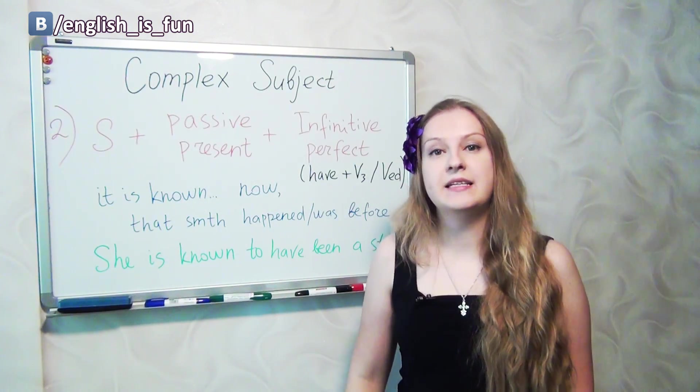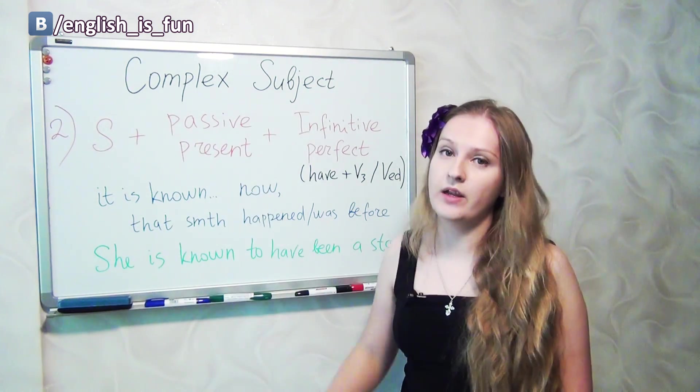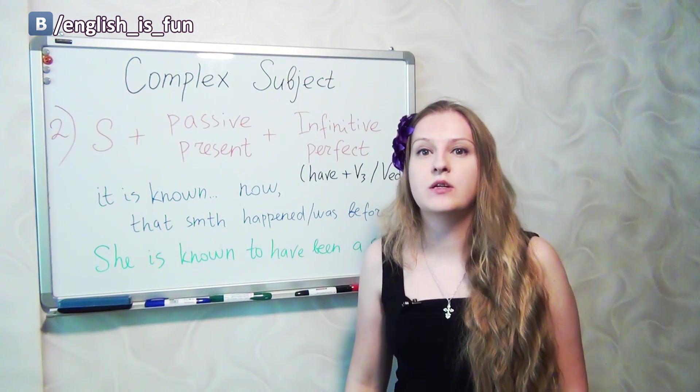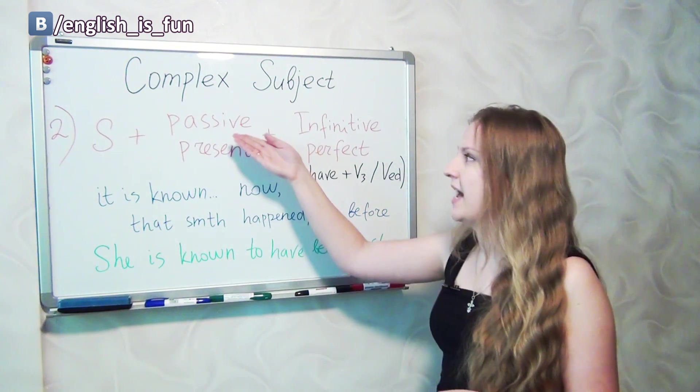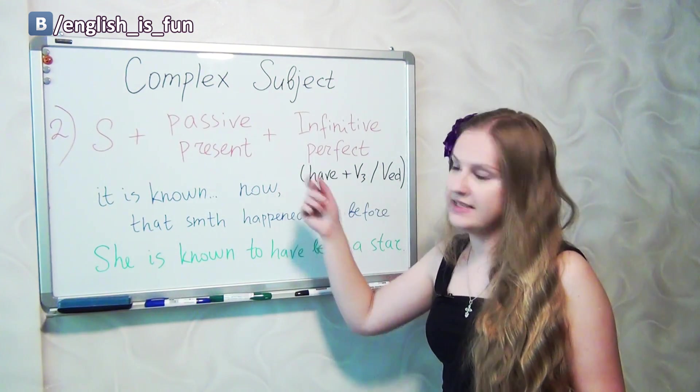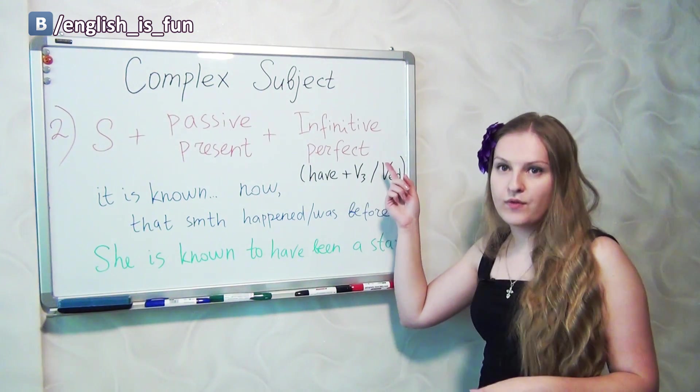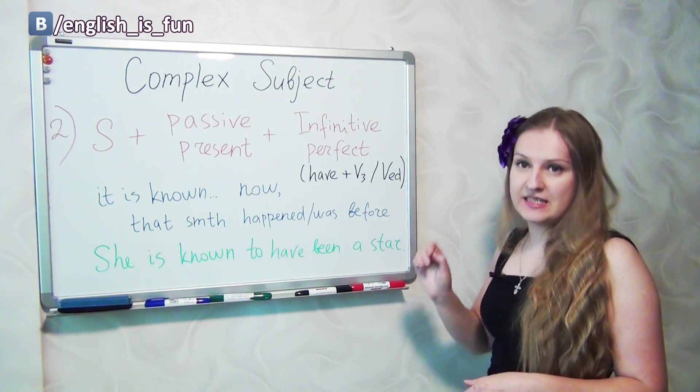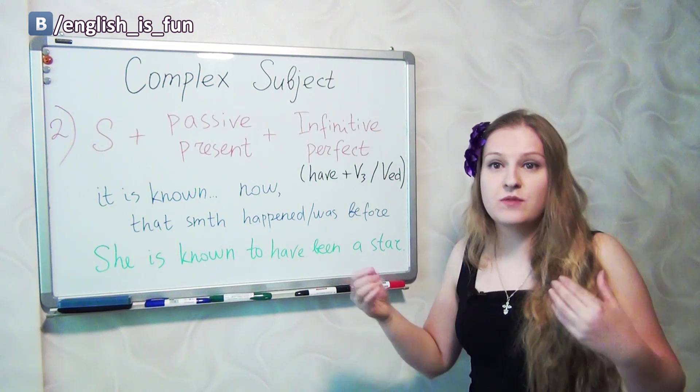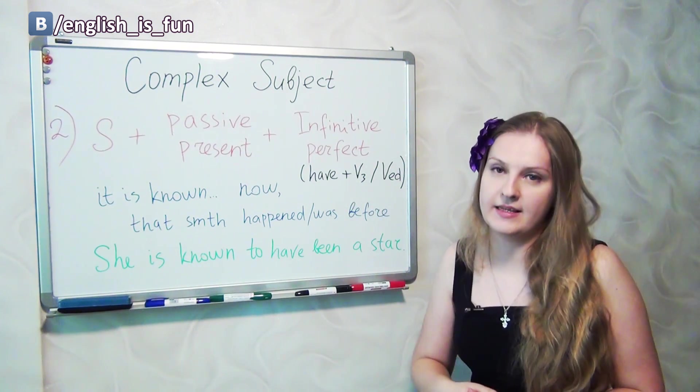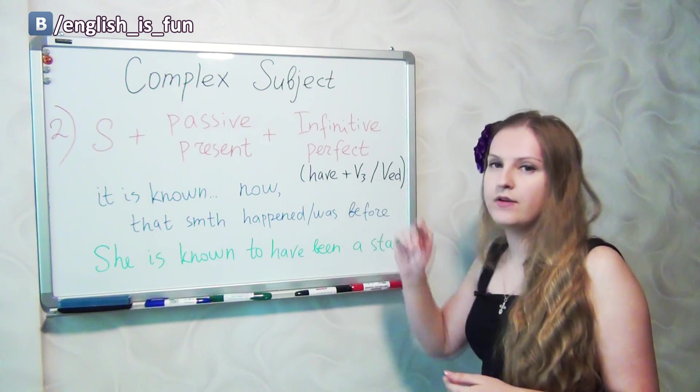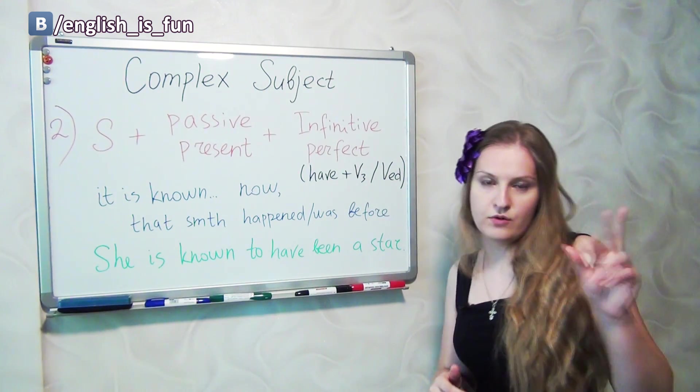Let's take a look at another situation, the second one. Here once again we are going to deal with the past. So here we use a subject, then passive but in present, and a perfect infinitive. A perfect infinitive is present perfect, but just when you use only have, you don't use has, only have.